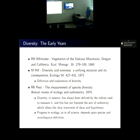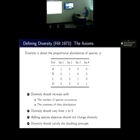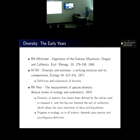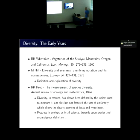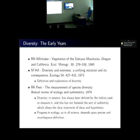The next paper I argue is actually the seminal paper, getting all the major ideas about diversity correct — but it fell into a big black hole. It's four pages and basically outlines the mathematics behind diversity. Even at the same time, there were papers suggesting this is a problem: diversity defined by indices has not fostered the uniformity which allows a clear statement of ideas and hypotheses. Progress in ecology depends on precise and unambiguous definition.